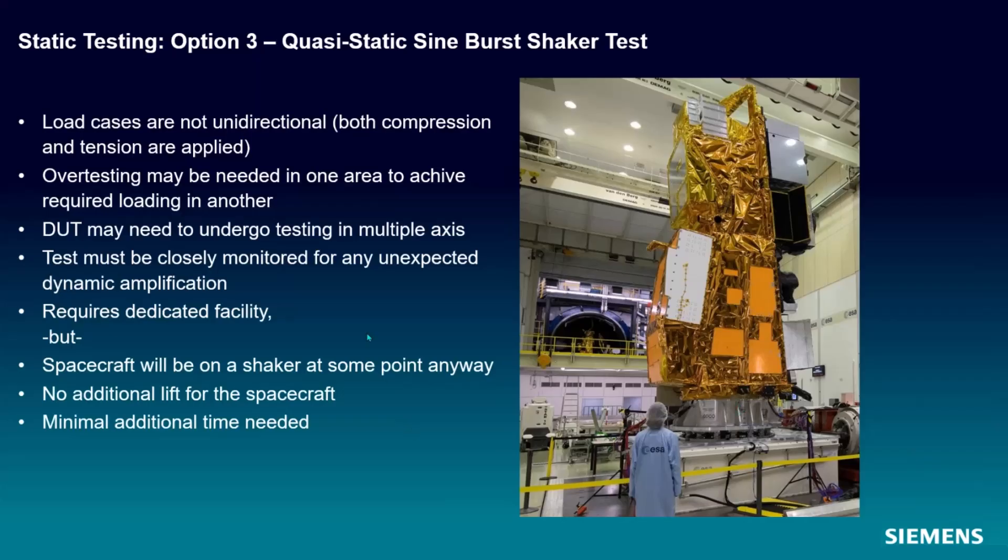Now, we don't like to do these quasi-static tests on a fully assembled spacecraft, but you can. Now, drawbacks of these quasi-static tests - our load cases are not unidirectional. We have both compression and tension being applied, right? Because we move up and down or back and forth. And our load cases are not like that during flight. It's constant acceleration. So we're typically always in compression. So that needs to be considered.